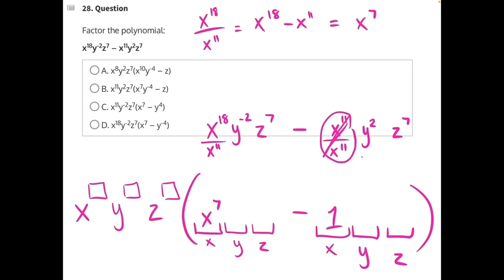And what we've pulled out, what we factored out, was an x to the 11. So we're done with our x variables. Let's move on to our y variables.